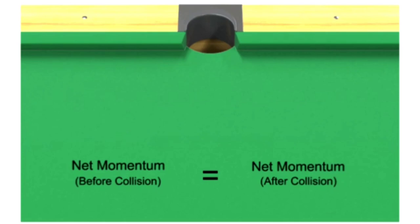If the eight ball and the cue ball are traveling at the same speed and collide head-on, then they will bounce off of each other with the same momentum, but in opposite directions. Their momentum and kinetic energy are transferred and conserved.